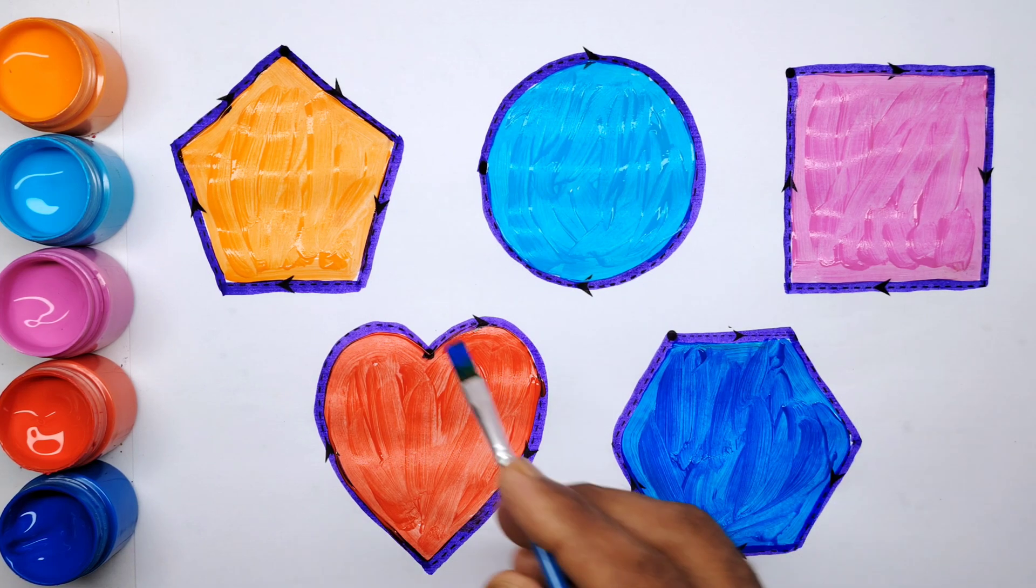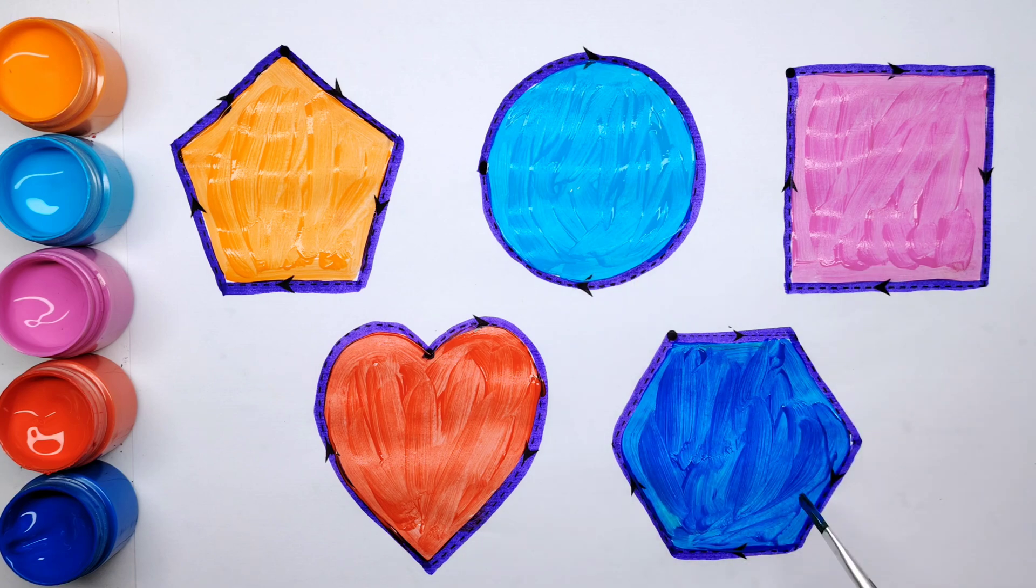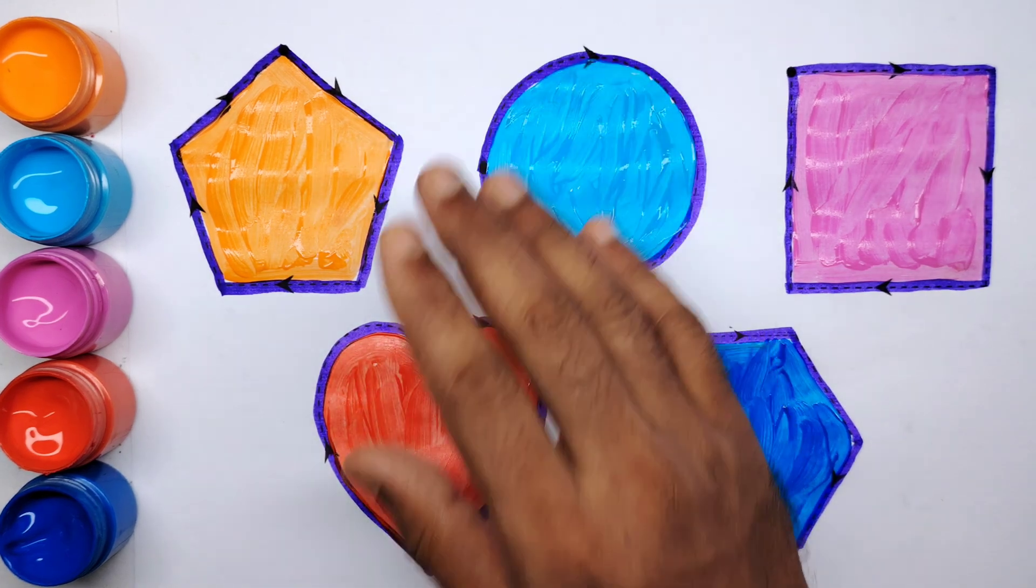Hexagon, pentagon, circle, square, heart, and hexagon. Bye bye kids.